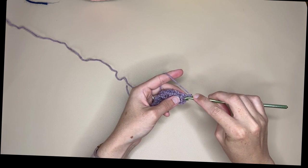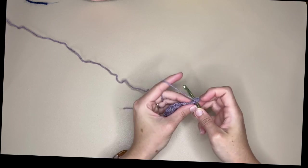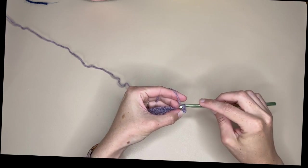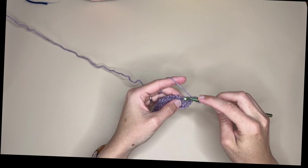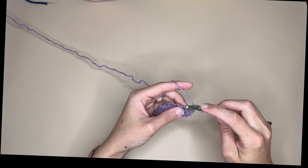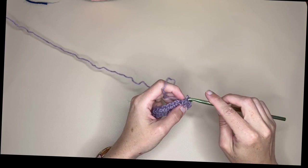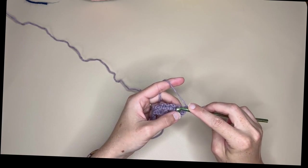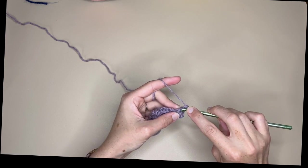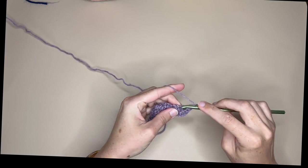So you're going to go into that first space, chain one, all right and then the spaces and the pattern itself are going to become more apparent as you go on.